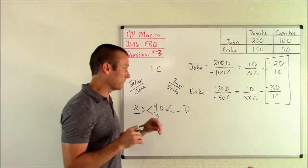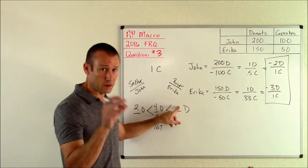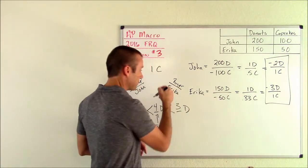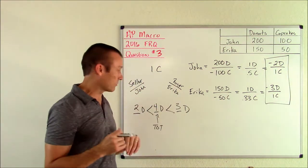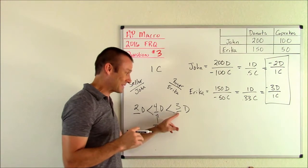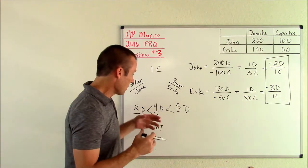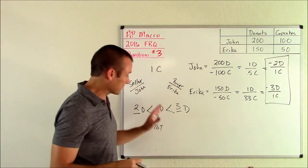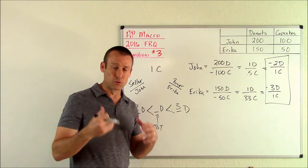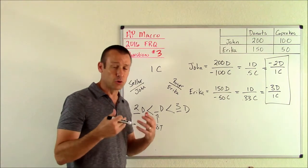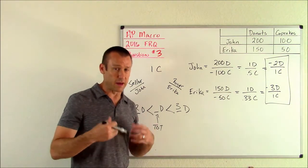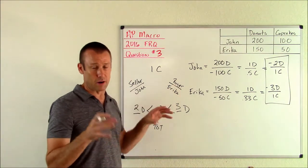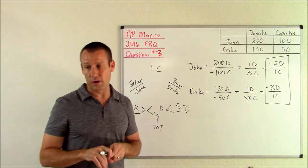Now let's do Erica. Her opportunity cost, remember she's buying the cupcakes. She wants that price to be less than three for it to be beneficial. Four is not, so I got to just get rid of it. It's not going to work. It's not going to be a mutually beneficial terms of trade. Who's not going to like four? Erica. That price is too high for that buyer. So we're going to write no good for Erica.